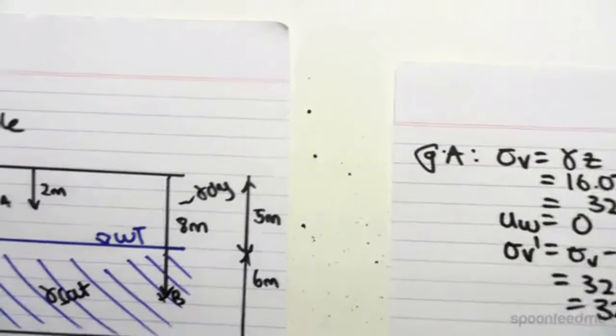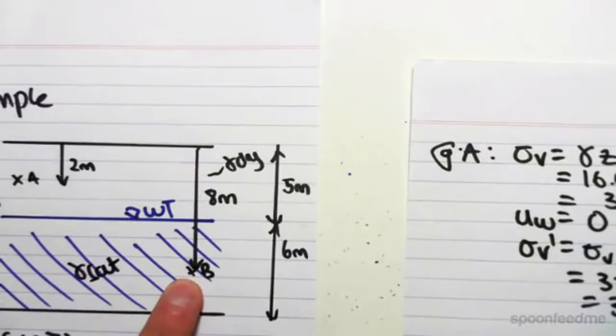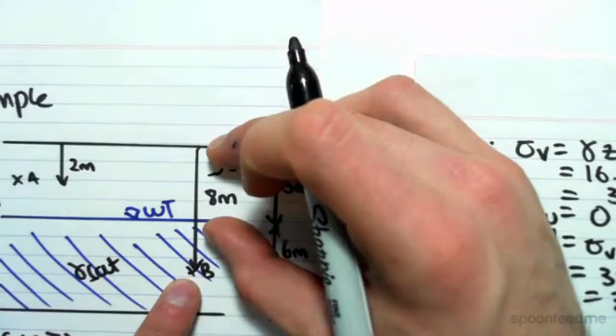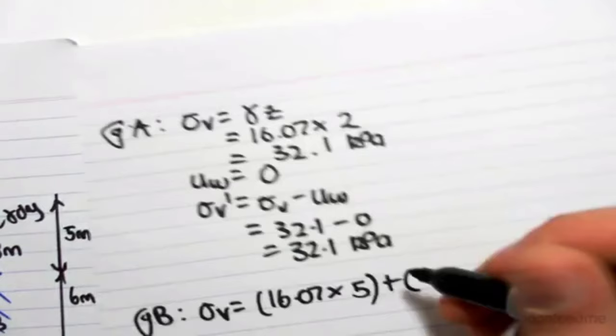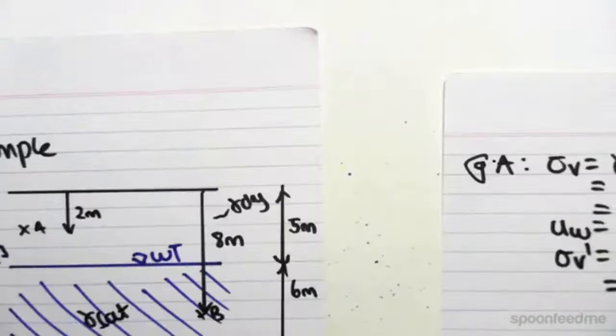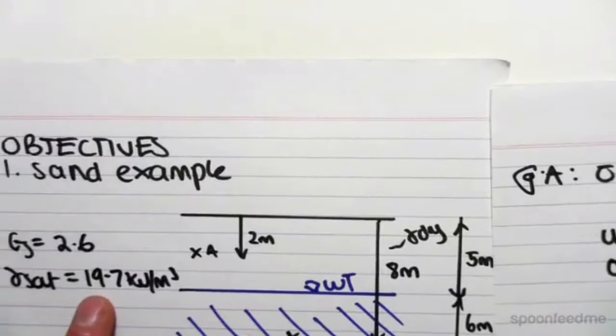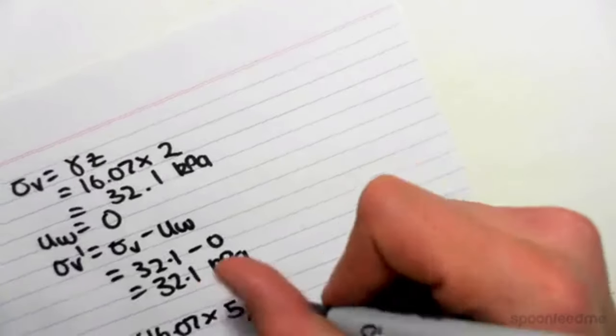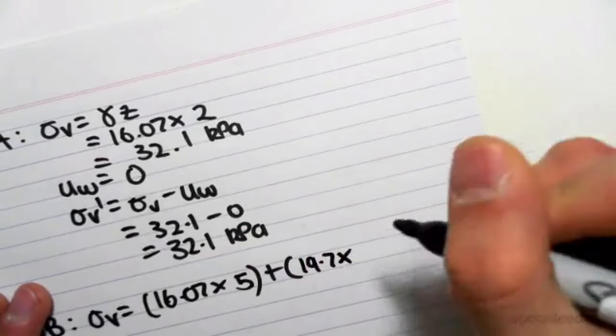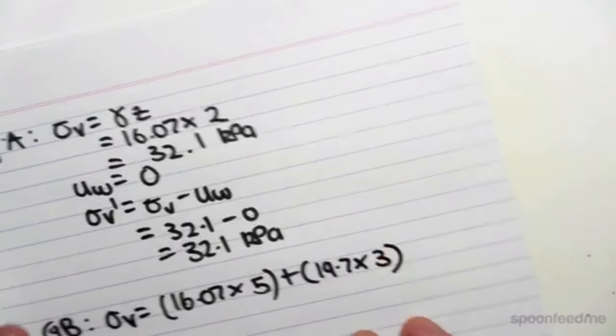So all of that is 5 meters, plus, we're going down to 8 meters. The first 5 meters was dry. The next 3 meters is saturated, so it's plus the saturated unit weight, which is 19.7, so plus 19.7 by that depth, which is 3.